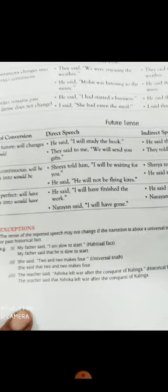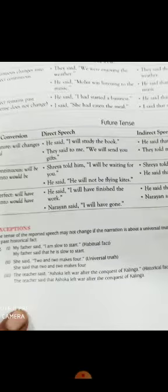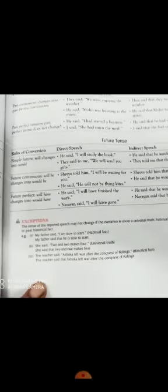Next: She said, 'Two and two makes four.' That is a universal truth — two and two makes four — so here we will not change the tense. The teacher said, 'Ashoka left the war after the conquest of Kalinga.' The teacher said that Ashoka left after the conquest of Kalinga. In this sentence, we will not change the tense because it is a historical fact.